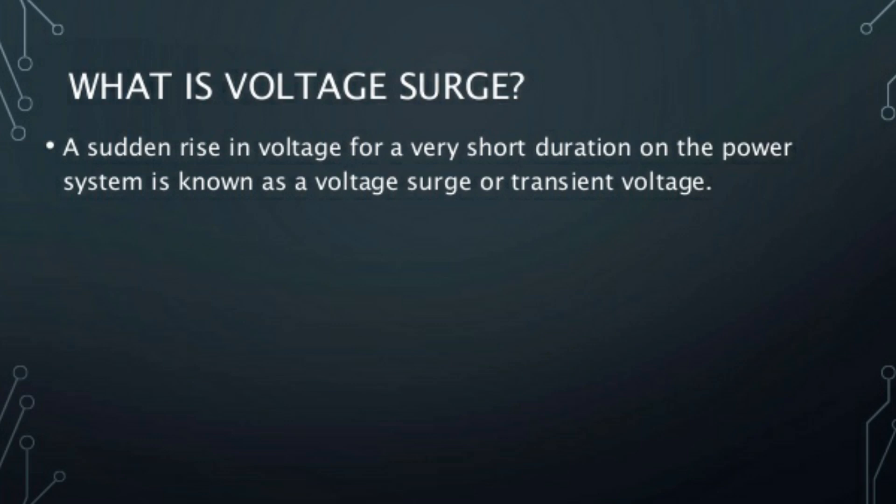The lightning arrestor is used in power systems as well as in buildings to protect them from surges and lightning. One rod is connected to ground and it acts as a lightning arrestor. In substations, how the lightning arrestor works and what are the reasons — all these will be discussed now.